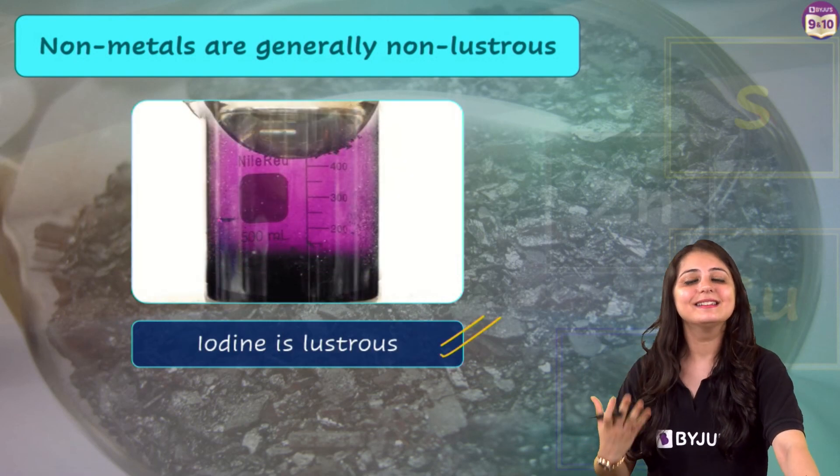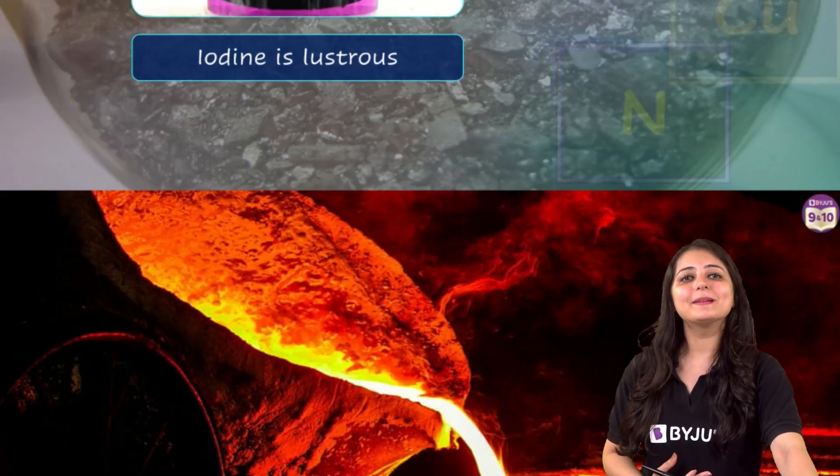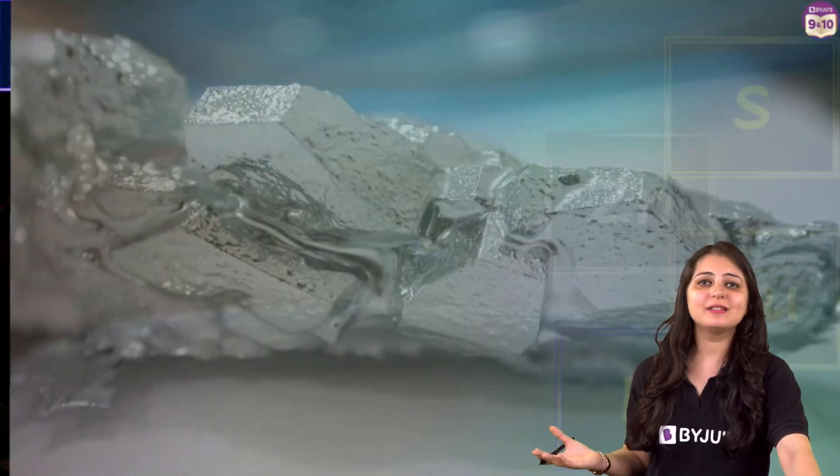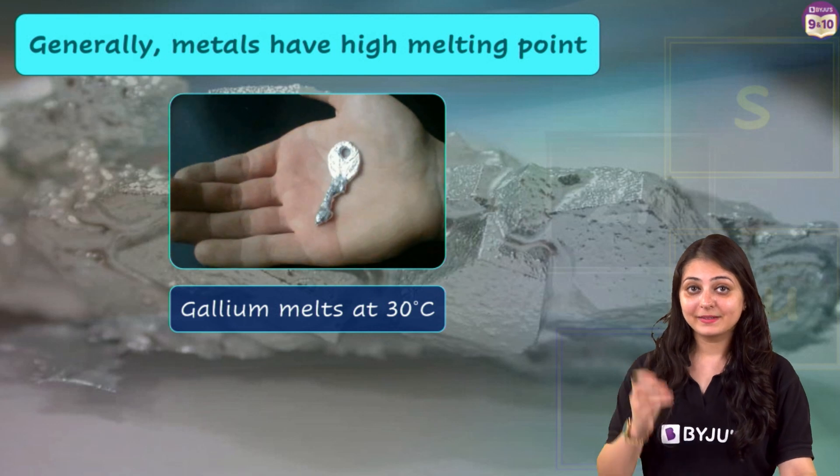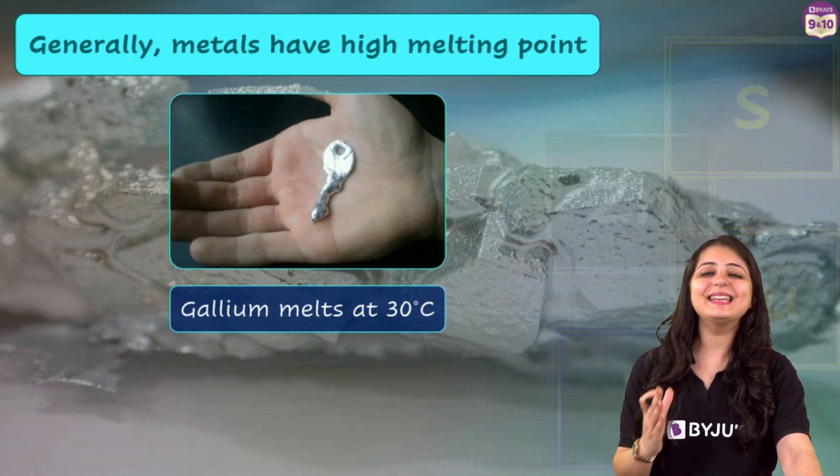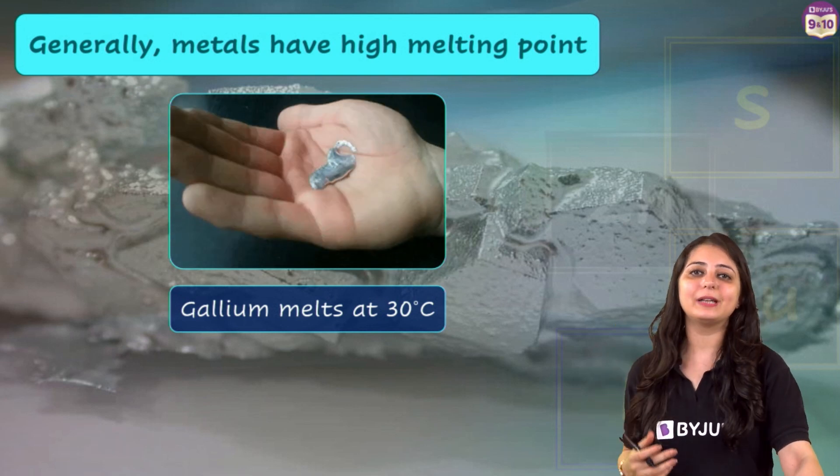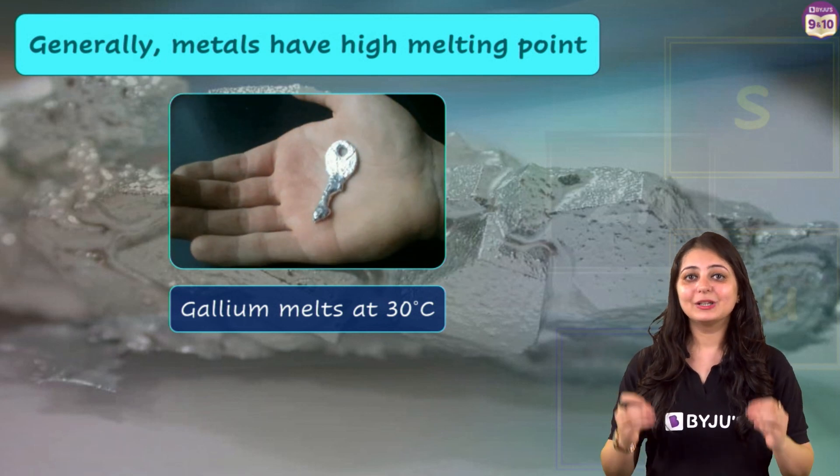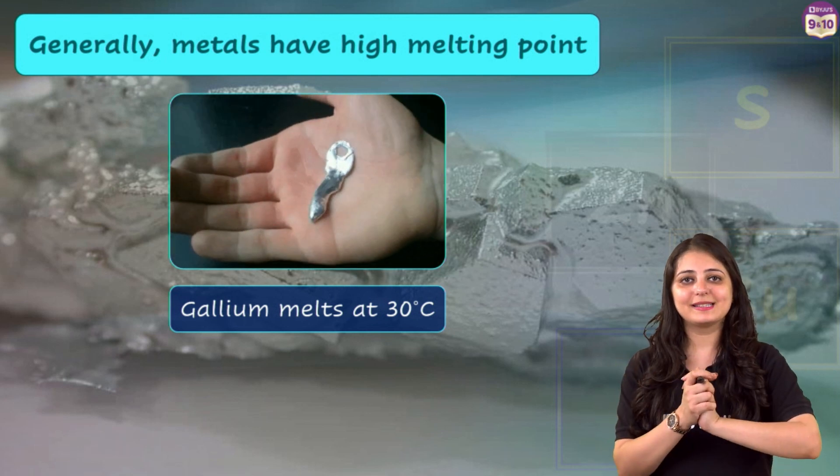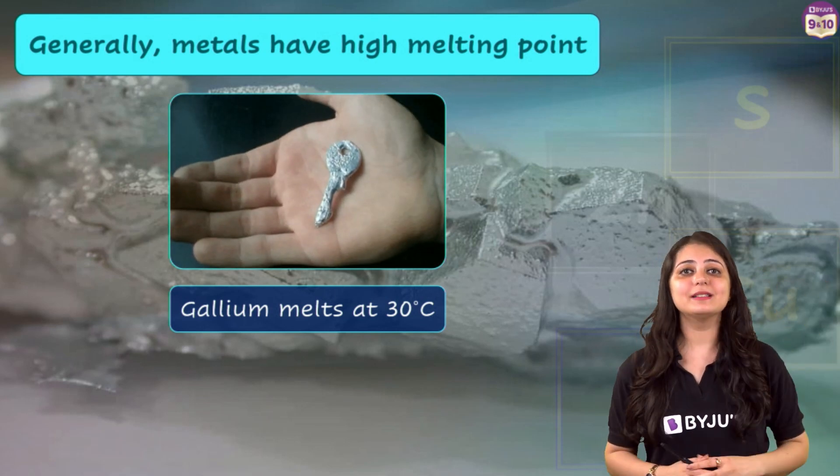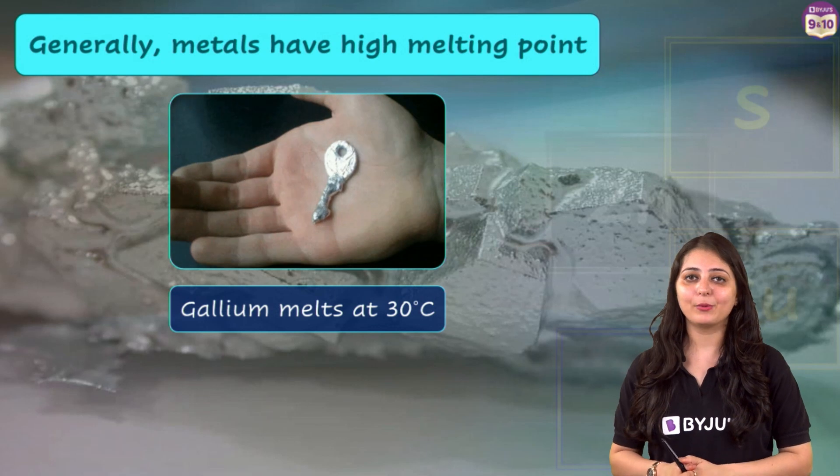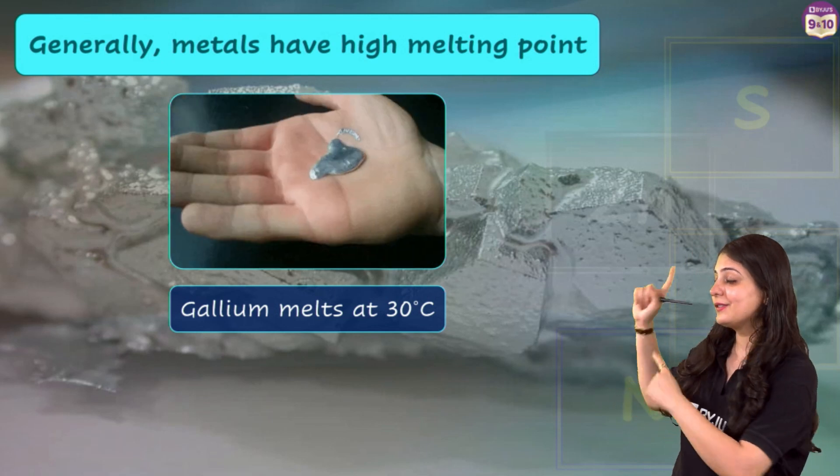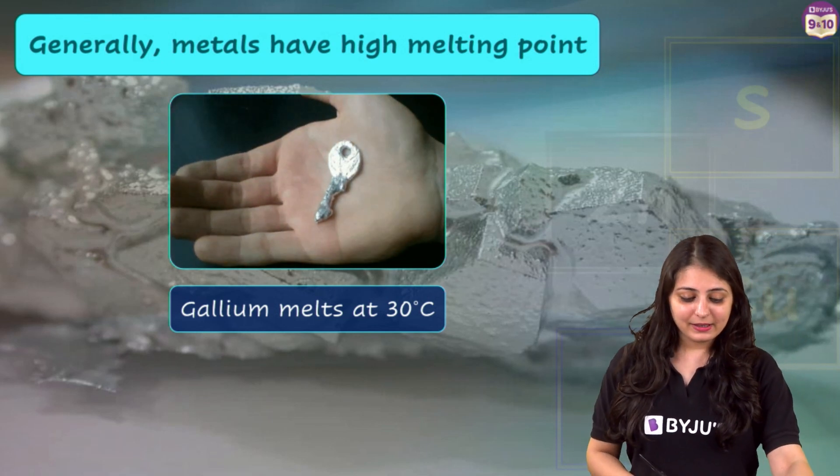The next property is melting point. So let's talk about melting point. Generally, metals have high melting point, but gallium and cesium, they become liquid at a temperature slightly above room temperature, around 303 Kelvin. Also, a non-metal, diamond - we know it's an allotrope of carbon - unlike other non-metals, diamond has a very high melting point. So metal also has an exception, non-metal also has an exception with respect to melting point.